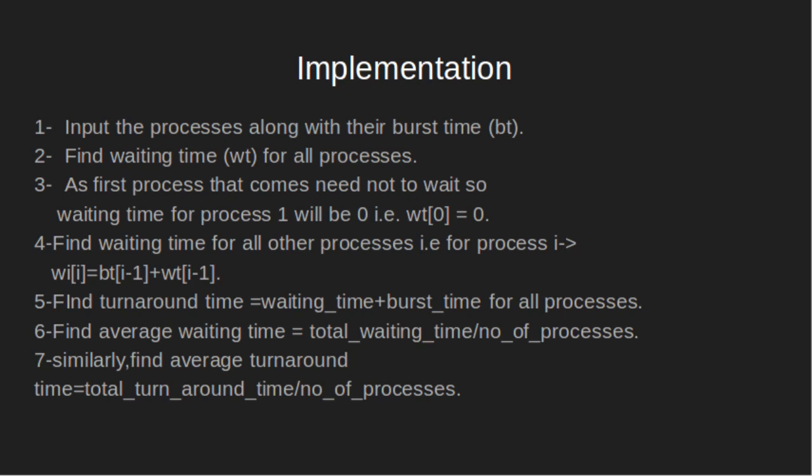Find turnaround time, which equals waiting time plus burst time, for all processes. Then find average time, which is total waiting time divided by number of processes. Similarly, find average turnaround time, which is total turnaround time divided by number of processes.